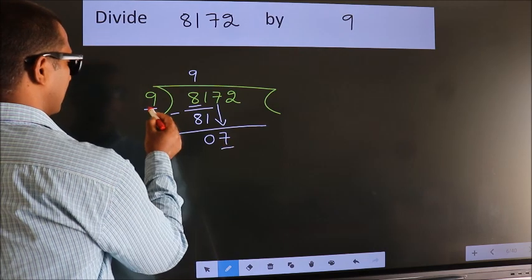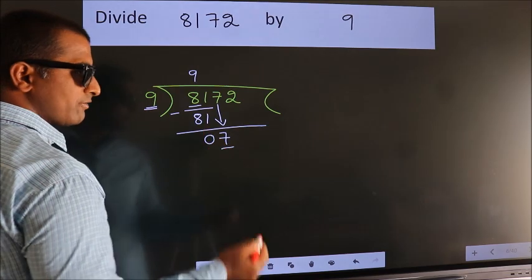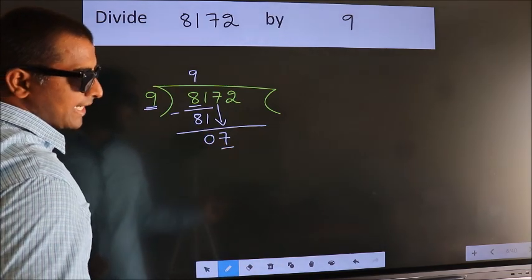Here we have 7, here 9. 7 is smaller than 9, so we should bring down the second number.